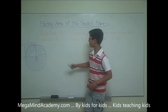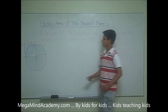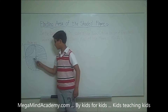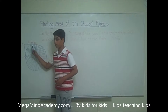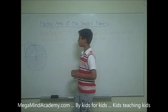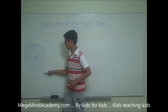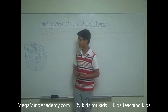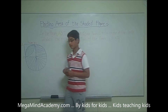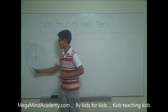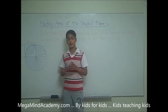It states in the problem that ABCD is a square of side 14 centimeters. This means all the sides of the square measure 14 centimeters. It also states in the problem that C is the center of the circle. So C is the center of this circle. This means that lines CD and line CB are both radii of this circle, which means the radius of this circle measures 14 centimeters, because lines CD and CB both measure 14 centimeters.